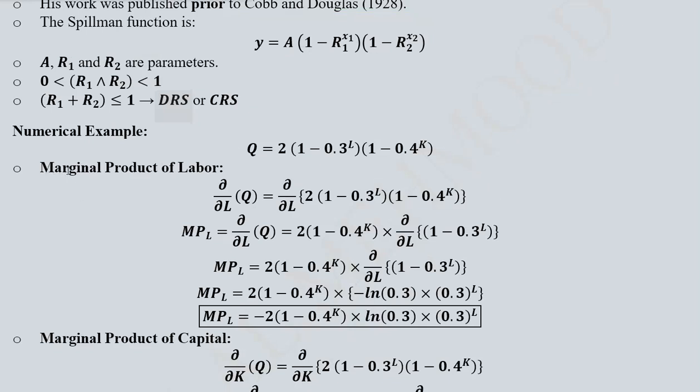First of all, we should try to calculate the marginal product of labor. For that we can differentiate our given Spillman production function with respect to labor. Once we do this it will be simple calculus and you can pause the video and see the steps.